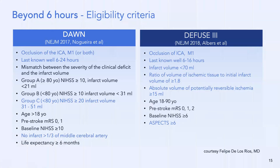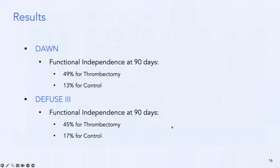I don't want people to memorize these numbers and become numerologists when it comes to treating stroke, but I want to show how things evolved. Both trials showed improvement of functional independence at 90 days: 49% for thrombectomy versus 13% for control in DAWN, and DEFUSE 3 was very similar.